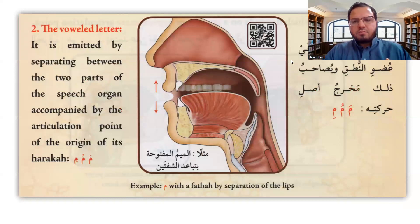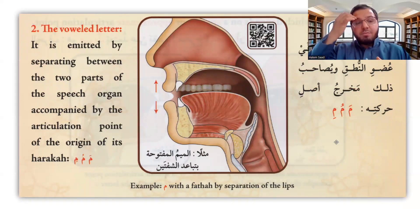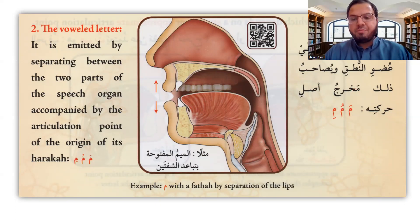The second level is the voweled letters, and these are produced by separating. When you make separation between the speech organs, the letter is emitted by separating between the two parts of the speech organs. For al-mim al-maftuha: 'mmm' is colliding, while 'mmm' with separation is the voweled letter.